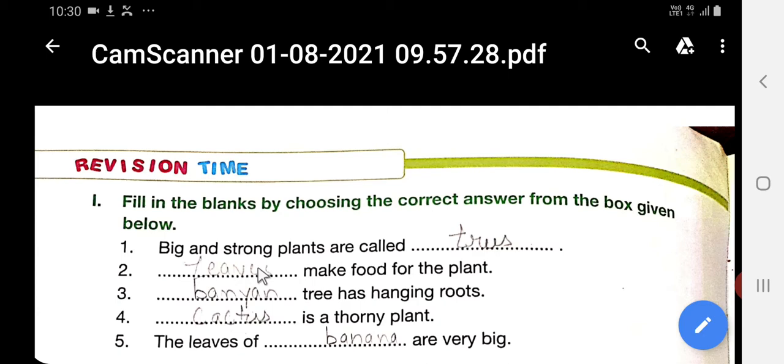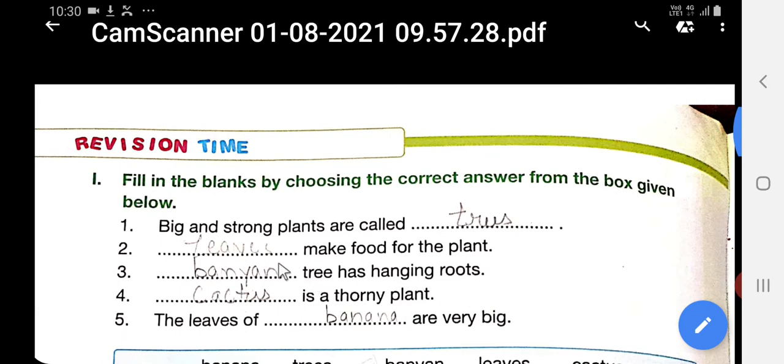Leaves make food for the plant. Leaves kya karti hai? Plant ke liye khana banati hai. Banyan tree has hanging roots. Banyan tree ki roots kaisi hoti hai? Latakti hui hoti hai. Cactus is a thorny plant. Cactus kya hai? Kaaton wala paudha hai.